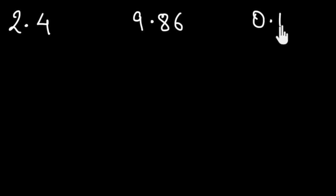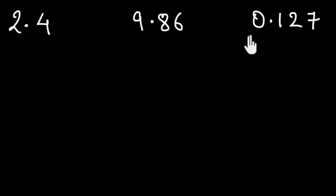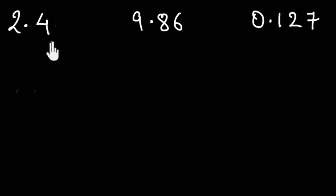So let's start with a couple of examples of the first case of terminating decimals. Let's say that we have 2.4, or maybe 9.86, or let's say 0.127. Let's first try to convert these terminating decimals into their rational forms and then see what's so special about these rational numbers. So let's start with 2.4.